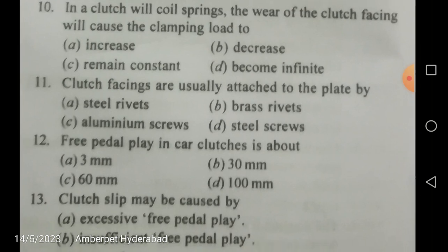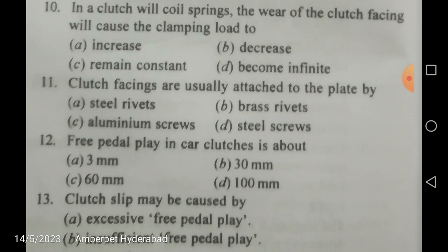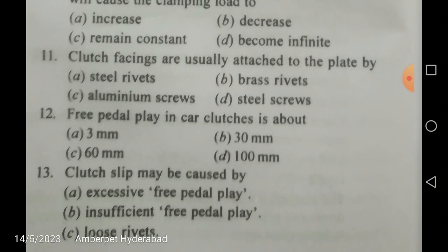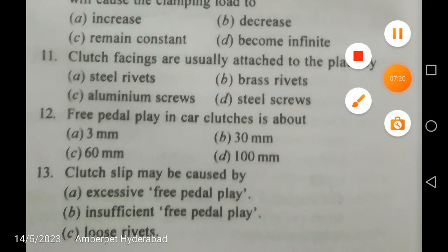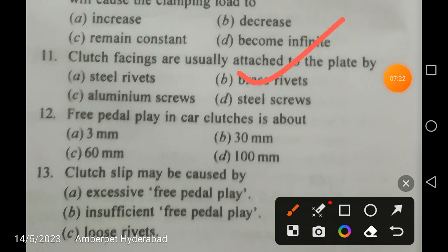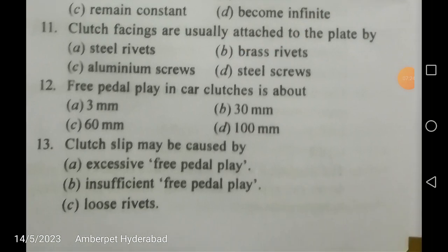Clutch facings are usually attached to the plate by what? The clutch construction involves many mechanical parts like levers and springs. The correct answer is brass rivets — rivets are used, and they are made of brass, which is an alloy of copper and zinc. Note: bronze is an alloy of copper and tin.